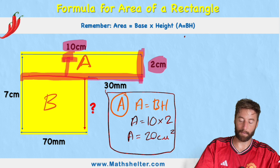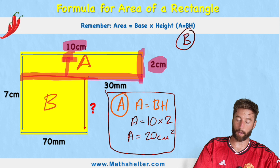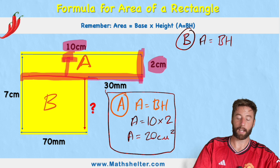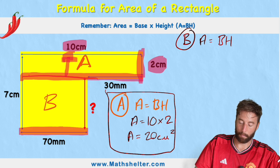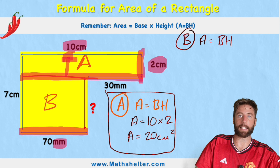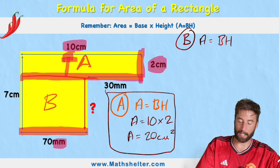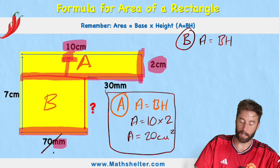Now we need to do the same to shape B. Let's start with our formula: area equals base times height. Now let's look for our base — we can see our base is just here. But I'm now in millimeters, so I need to convert this back to centimeters. So 70 millimeters becomes 7 centimeters.